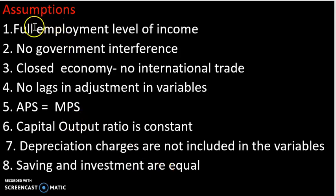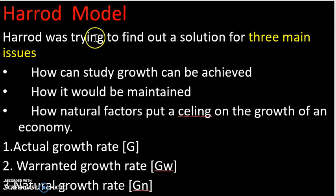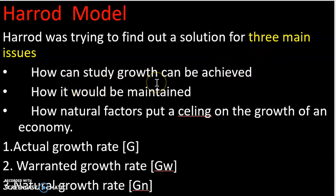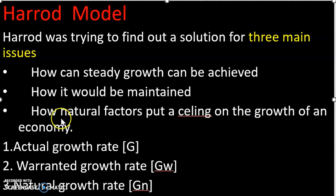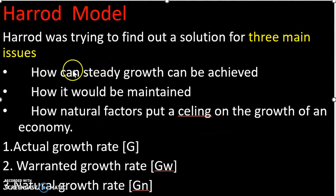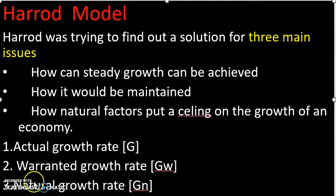These are the assumptions in the Harrod-Domar model. The model tries to find solutions for three main issues: how steady growth can be achieved, how steady growth can be maintained, and how natural factors put a ceiling on the growth of an economy. This gives us three growth rates: the actual growth rate, the warranted growth rate, and the natural growth rate.